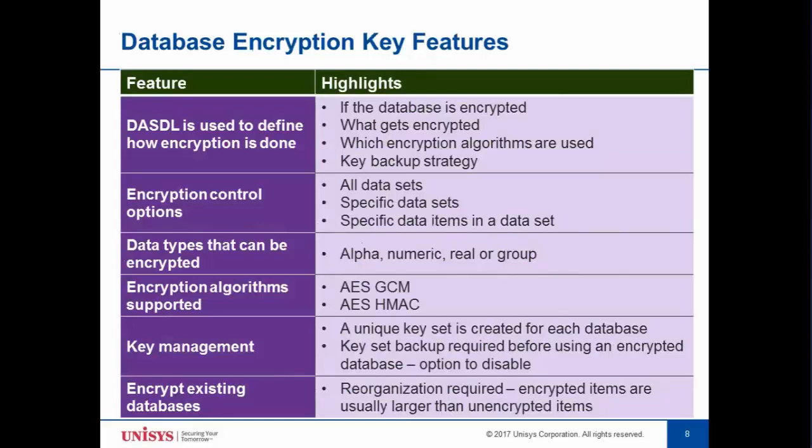You pick and choose whatever items you want to encrypt in the DASDL source. You can encrypt alpha, numeric, real, and group items. We have ruled out bit and Boolean items — we decided not to support those. Every encrypted item's size needs to be a multiple of 16 bytes plus 30 bytes for padding. This is for the AES GCM algorithm. We support two algorithms, but we strongly recommend AES GCM because it is the most popular one currently available in the market.